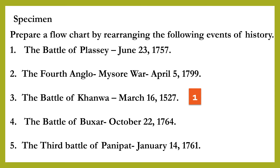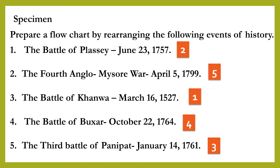The second event is the first one: the Battle of Plassey, which took place on June 23, 1757. The third event is the fifth one: the third Battle of Panipat, which took place on January 14, 1761. The fourth event is the fourth one: the Battle of Boxer, which took place on October 22, 1764. And the fifth event is the second one: the fourth Anglo-Mysore War, which took place on April 5, 1799.